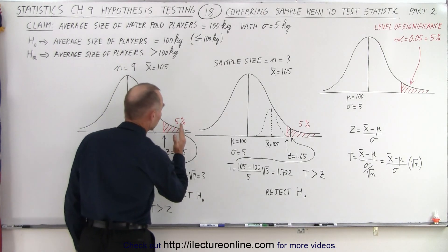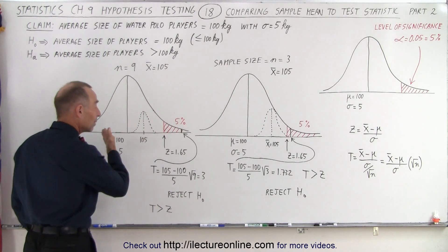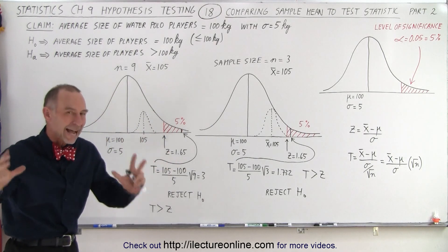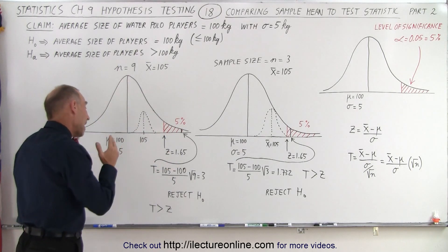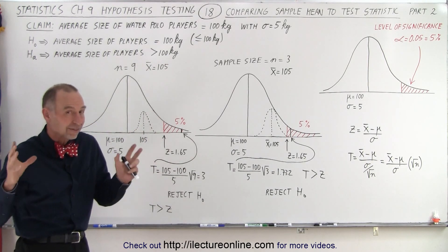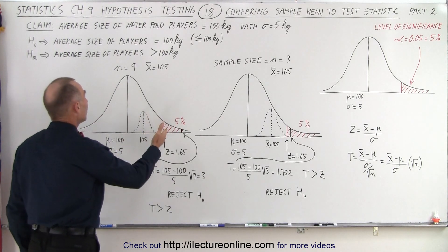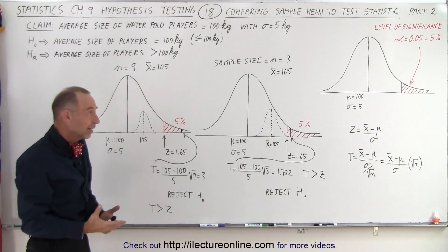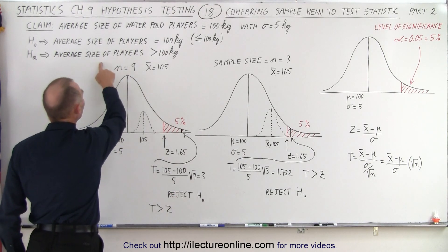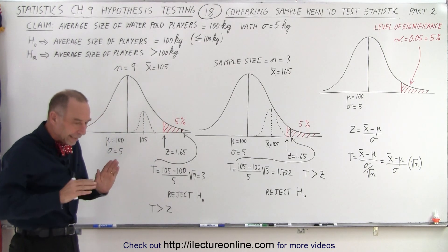Notice how far we are in the critical region — that shows us we have quite a bit more confidence that we made the right decision. If we pick a random sample of 9 players and their average size is 105, that is significantly different than 100, and based on a sample of 9 it gives us a greater amount of confidence. Therefore we can say much more confidently that we're going to reject the null hypothesis and accept the alternate hypothesis that the average size of players is greater than 100 kilograms.